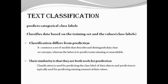Text classification predicts categorical class labels and classifies data based on the training set and class labels. Classification differs from prediction. Classification constructs models that describe and distinguish data classes or concepts, whereas prediction is to predict missing or unavailable data. Their similarity is that they are both tools for prediction. Classification is used for predicting the class label of data objects, and prediction is typically used for predicting missing numerical data values.